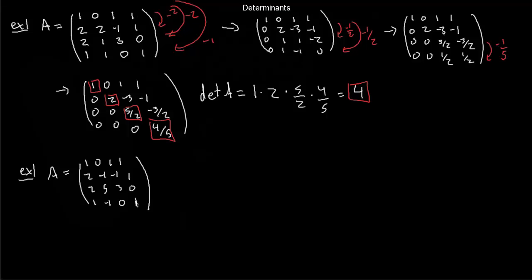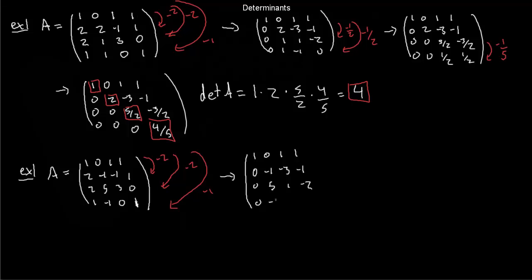After those three row operations, the result is: 1, 0, 1, 1; 0, −1, −3, −1; 0, 5, 1, −2; 0, −1, −1, 0. This matrix has the same determinant as A because we've only done row operations of type 1. Keep going: apply 5 times row 2 plus row 3, and −1 times row 2 plus row 4.